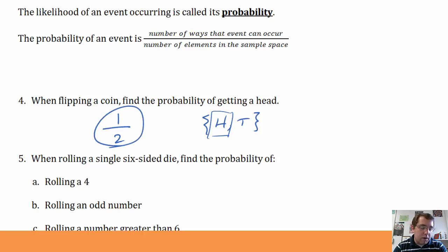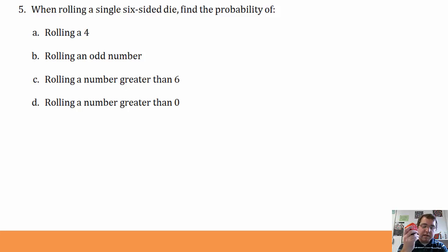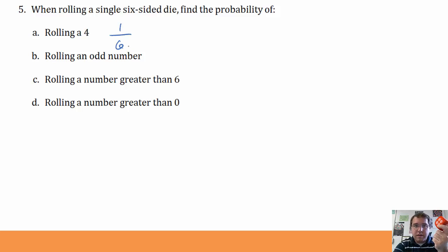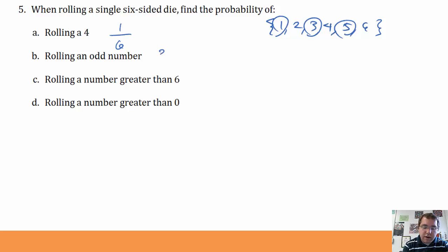What's the probability of getting a tail? 1/2. When I roll a single six-sided die, what's the probability of rolling a 4? The sample space is {1, 2, 3, 4, 5, 6}. Only 1 of them gives me a 4 out of 6 total, so 1/6 is the probability of rolling a 4. The probability of rolling a 3 or a 6 is also 1/6. What's the probability of rolling an odd number? The odd numbers are 1, 3, and 5 — that's 3 ways out of 6, giving a probability of 1/2.